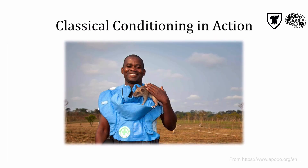An organization called Apopo trains African giant pouched rats to clear huge areas of landmines. They've been called hero rats, and this one shown here was specifically trained to detect the smell of explosives. Their sense of smell is as good or even better than dogs, and because they're smaller, they're unlikely to set off hidden mines.